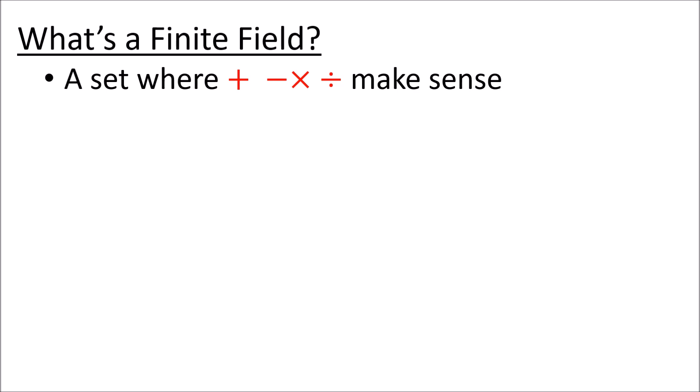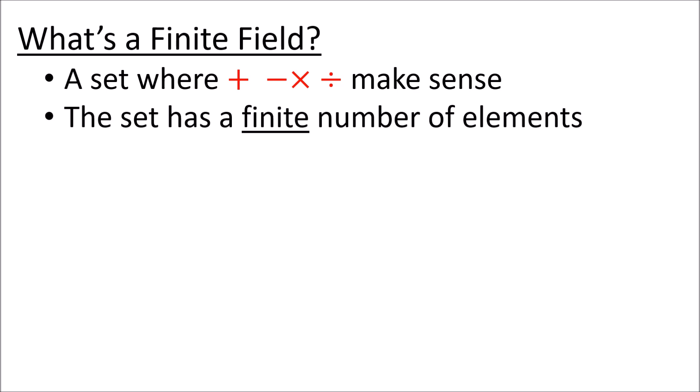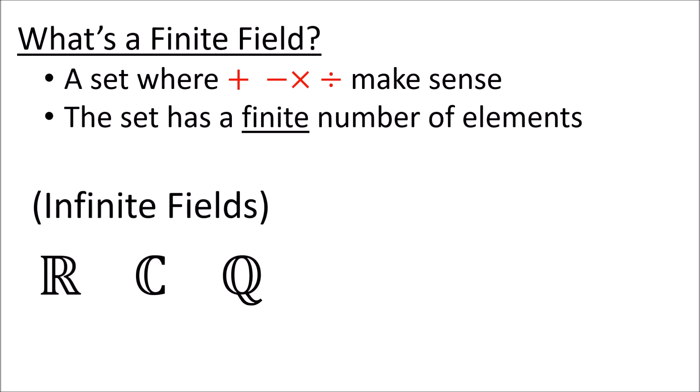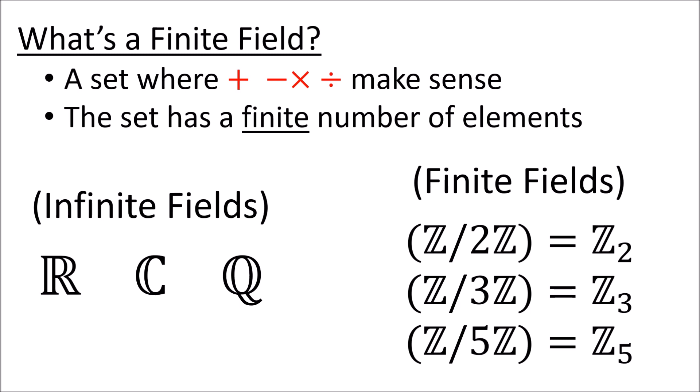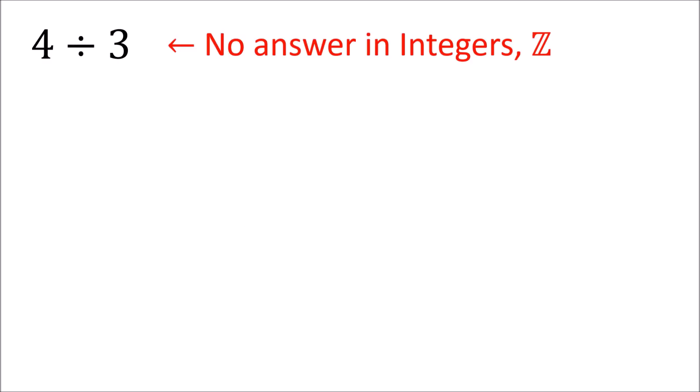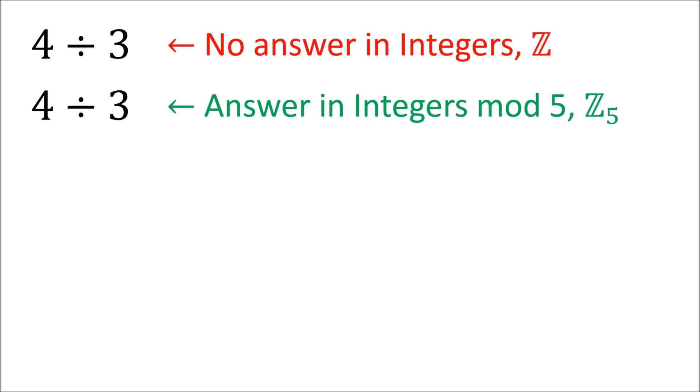Non-binary codes are defined using finite fields. A finite field is just a set where addition, subtraction, multiplication, and division make sense, and the set has a finite number of elements. So the real, complex, and rational numbers are infinite fields because they have an infinite number of members. Examples of finite fields include the integers mod 2, the integers mod 3, and the integers mod 5 — it turns out that we can define division properly in these sets. Earlier I said that 4 divided by 3 in the ordinary integers doesn't work out properly, but in the integers mod 5, 4 divided by 3 does have a sensible answer that lives in the integers mod 5.